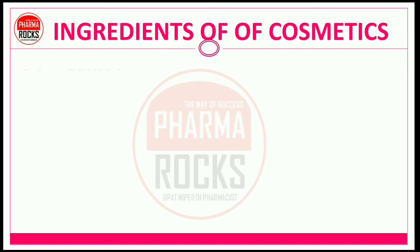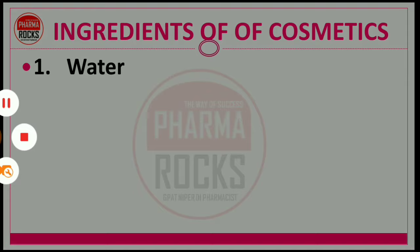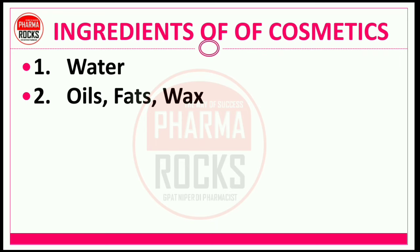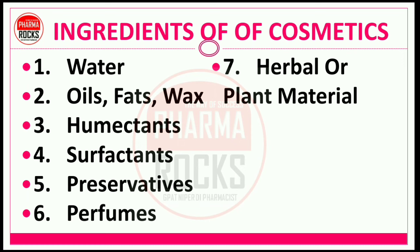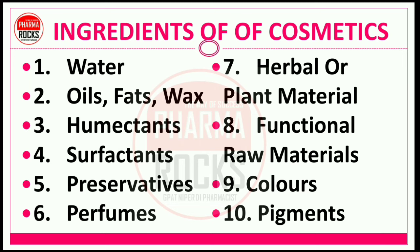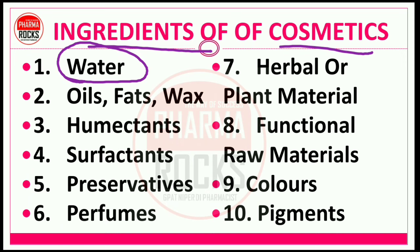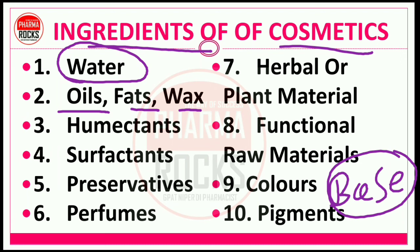Now let's study the ingredients of a cosmetic preparation. The key ingredients are: water (the main chief ingredient), oil, fat and wax, humectants, surfactants, preservatives, perfumes, herbal and plant materials, functional raw materials, and colors and pigments. Water is used as a vehicle in cosmetic preparations. Oils, fats, and waxes form the main base — for example, the base of any cream or lotion is prepared using various oils, fats, and wax materials. Water is the chief ingredient: its purity determines the stability and quality of the final product. Pure water must be used in cosmetic manufacturing.